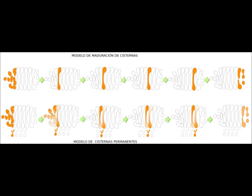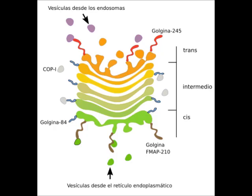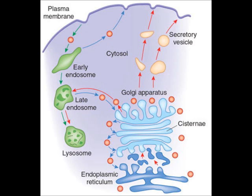From the cis network to the trans network: on the cis side there is a continuous process of formation of cisternae with material from the endoplasmic reticulum. The transition vesicles are accompanied by a protein called COPII. Between the reticulum and the Golgi they constitute the compartment called the ER-Golgi intermediate compartment (ERGIC) or the ER-cis-Golgi. Vesicles covered by COPII are responsible for that anterograde transport from the endoplasmic reticulum to the Golgi.